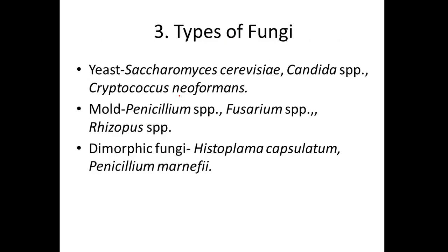They will also ask you about the types of fungi. Fungi can be classified into yeast, mold, and dimorphic fungi. Yeast are unicellular microorganisms, mold are multicellular microorganisms, and dimorphic fungi are those that change their morphology according to temperature. Examples of yeast include Saccharomyces cerevisiae, Candida species, and Cryptococcus species. Examples of mold include Penicillium, Fusarium, and Rhizopus species. Examples of dimorphic fungi include Histoplasma capsulatum and Penicillium marneffei.